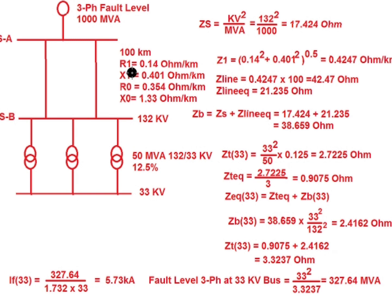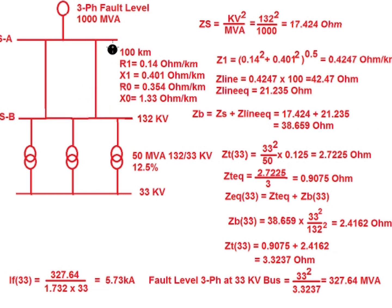Since R1 and X1 are known, we can calculate the positive sequence impedance: Z1 = √(R1² + X1²) = 0.4247 ohm per kilometer. Since the line length is 100 km, the line impedance is Zline = Z1 × 100 = 42.47 ohm. Since there is a double circuit line — two lines connected in parallel between substation A and substation B — the equivalent line impedance is 42.47 / 2 = 21.235 ohm.